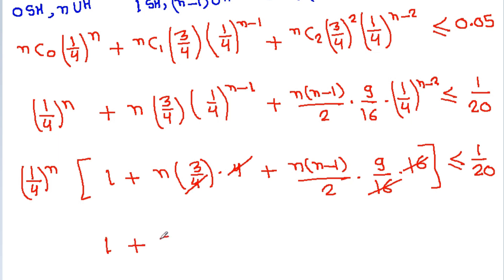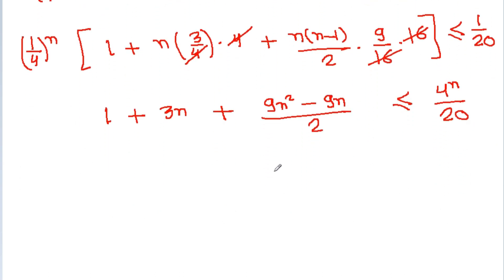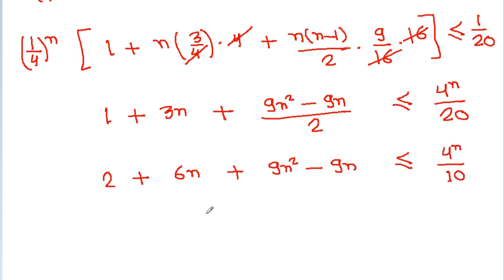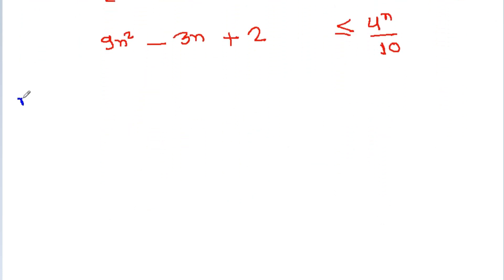So we have 1 + 3n + 9n²/2 − 9n/2 ≤ (4^n)/20. Multiplying both sides by 2 gives 2 + 6n + 9n² − 9n ≤ (4^n)/10, which simplifies to 9n² − 3n + 2 ≤ (4^n)/10. This is the inequality we need to test for successive values of n.